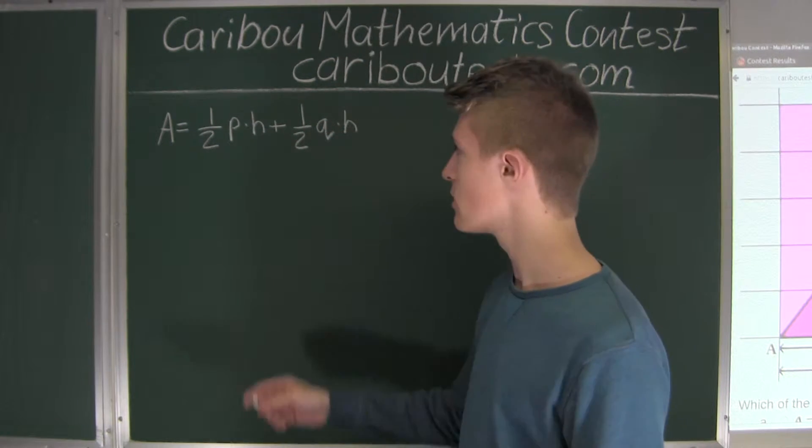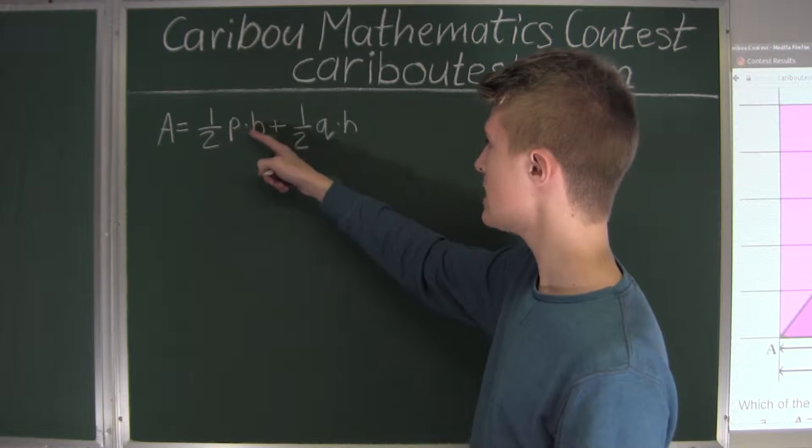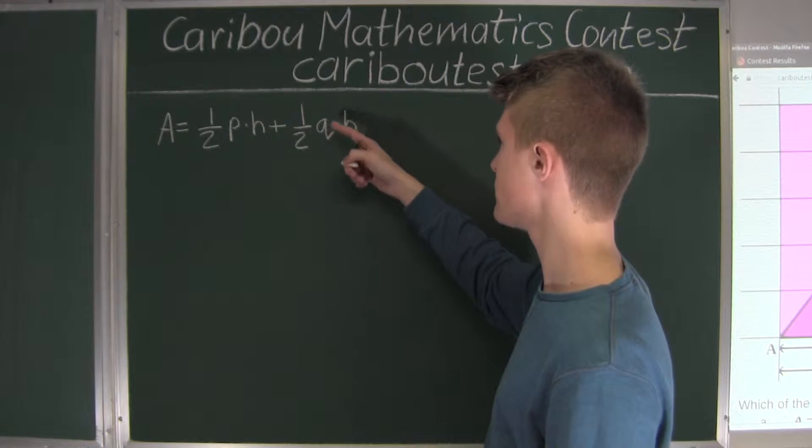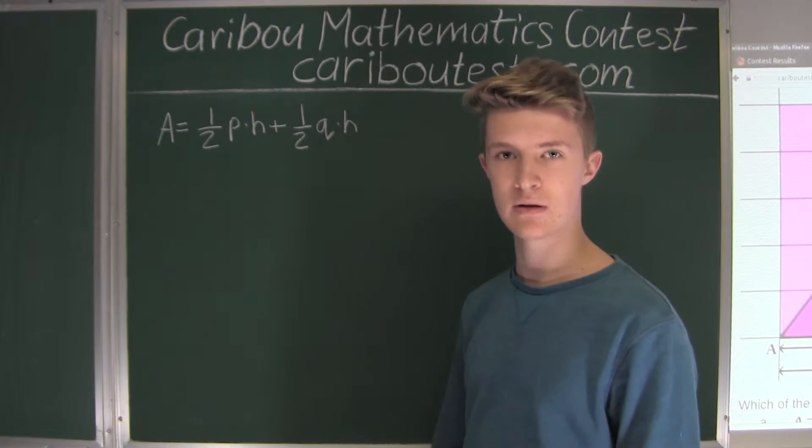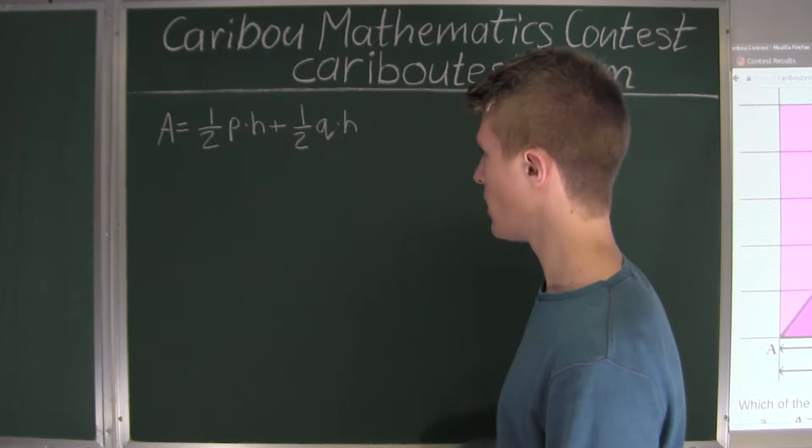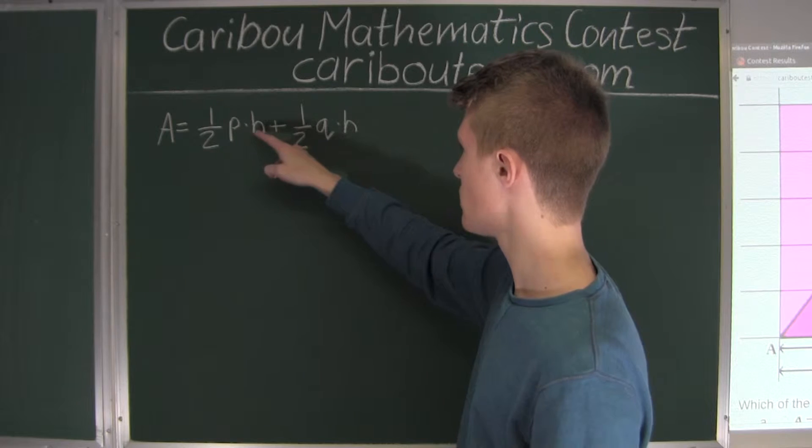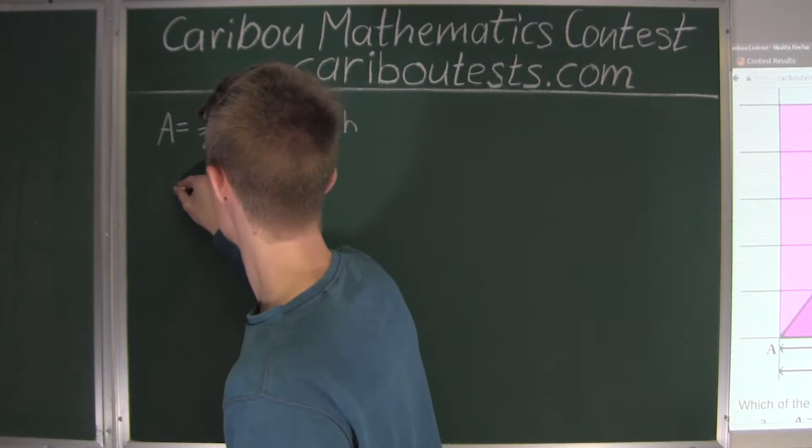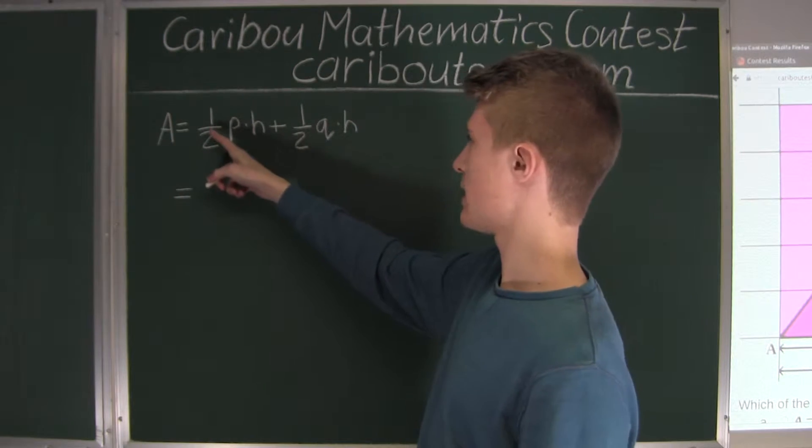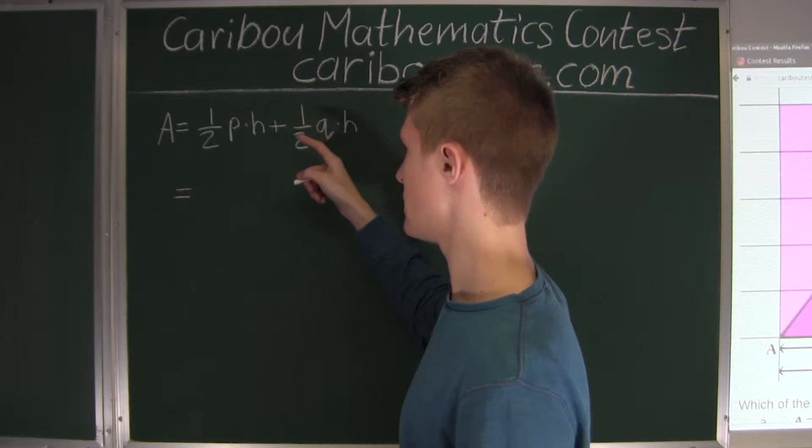So now, let's look at their common factors. Well, of course, both have 1 over 2, and they also both have H as a factor. So we will write that. We will have 1 over 2 times H.